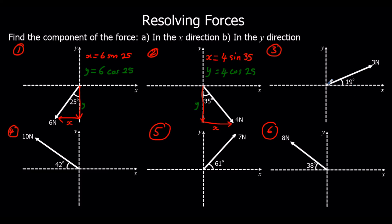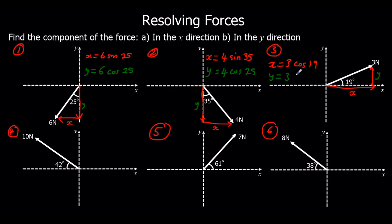Question 3: this time x is the adjacent, so that's cos, so x equals 3 cos 19. Y is the opposite, so it's sine, so y equals 3 sin 19.